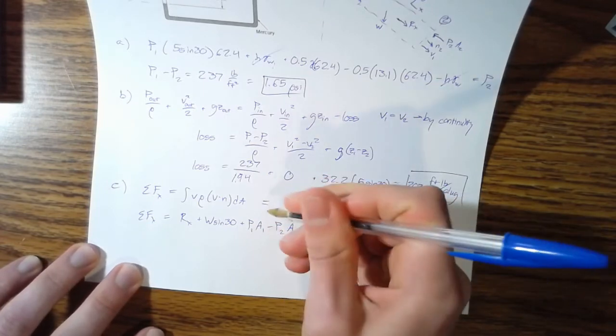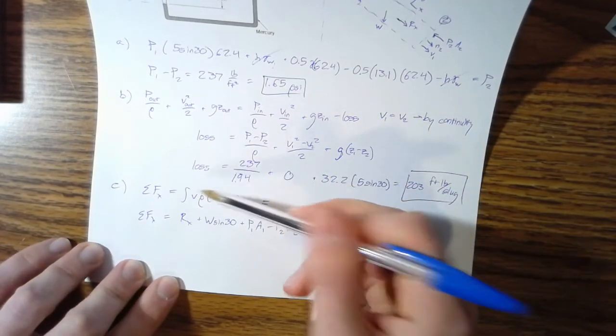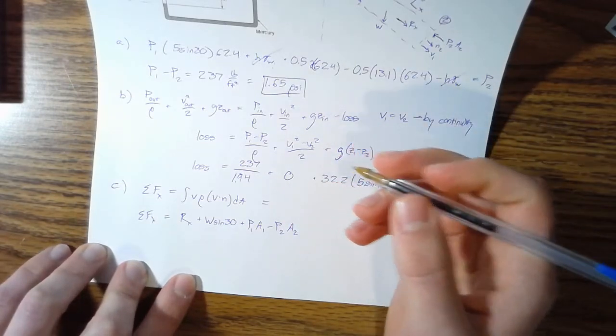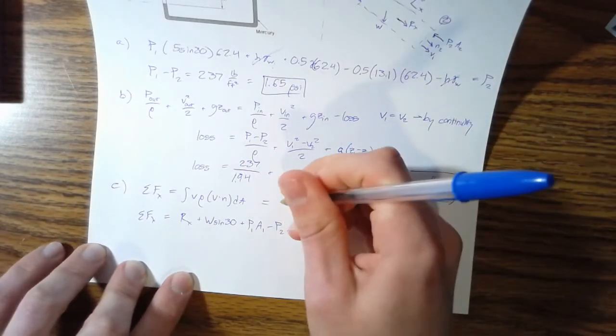We have two parts to this. There's from control surface one and control surface two. So from one, we have V one. I'll write rho out here. So V one times rho V dot N.